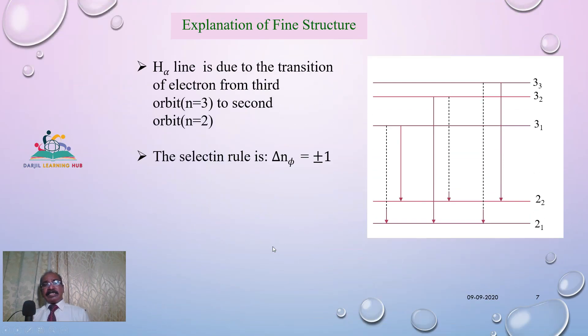Now we can see how it explains the fine structure of the H-alpha line. I told already in the earlier episode what is H-alpha line. The transition of a hydrogen electron from the third orbit to the second orbit is called H-alpha line. That will be the first line of the Balmer series. According to Bohr, he expects only one spectral line. But after careful examination, the scientists have observed three lines are there.